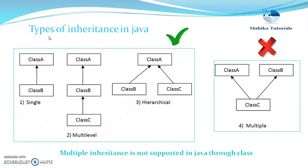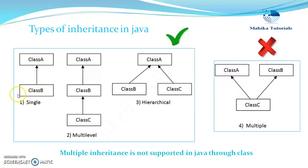Now let us discuss the types of inheritance available in Java. The first type is single inheritance, which means there is simply one super class and one subclass. In our example, class B extends class A — that is, class A is the super class and class B is the subclass, so class B acquires the properties and behaviors of class A.